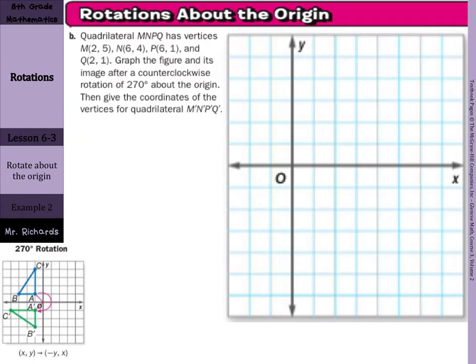Quadrilateral MNPQ has vertices M(2,5), N(6,4), P(6,1), and Q(2,1). Graph the figure and its image after a counterclockwise rotation of 270 degrees about the origin. Then give the coordinates of the vertices for quadrilateral M'N'P'Q'. Well, first we need to graph the original image first. Let's graph our M at (2,5). Let's graph our N at (6,4). Our P is at (6,1) and our Q is at (2,1). And this is our quadrilateral.